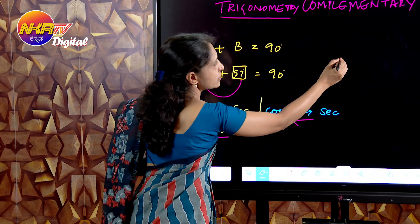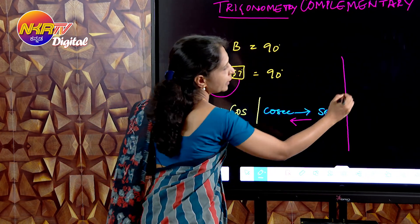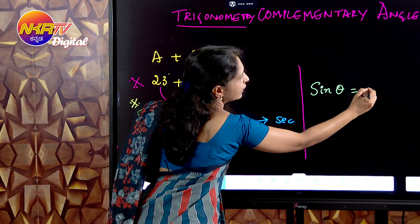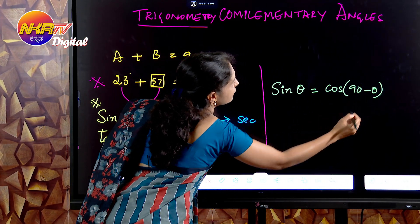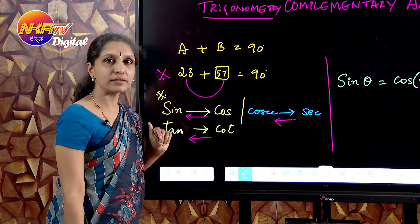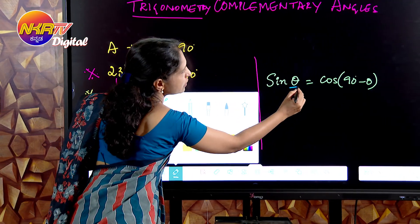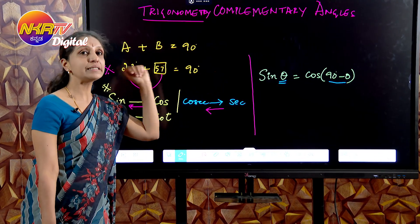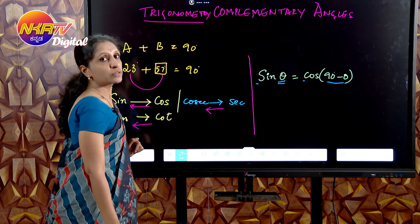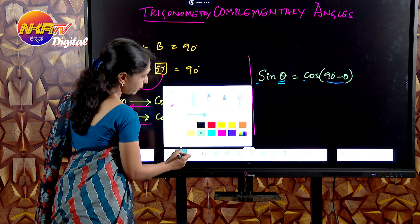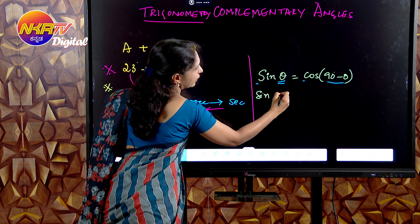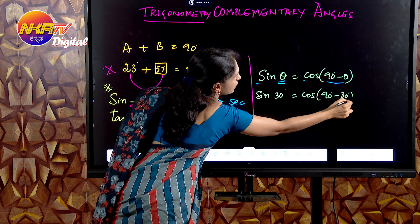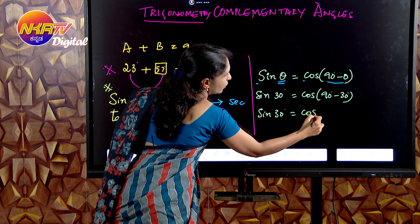A quick recall of what this exactly means: if I write sine theta, I can write this as cos of 90 degrees minus theta. These are the complementary angles. If you add these two angles — theta and 90 minus theta — you get 90 degrees, associated with sine and cos. For example, sine of 30 degrees equals cos of 90 minus 30, which is cos 60 degrees. So sine 30 is the same as cos 60 degrees.